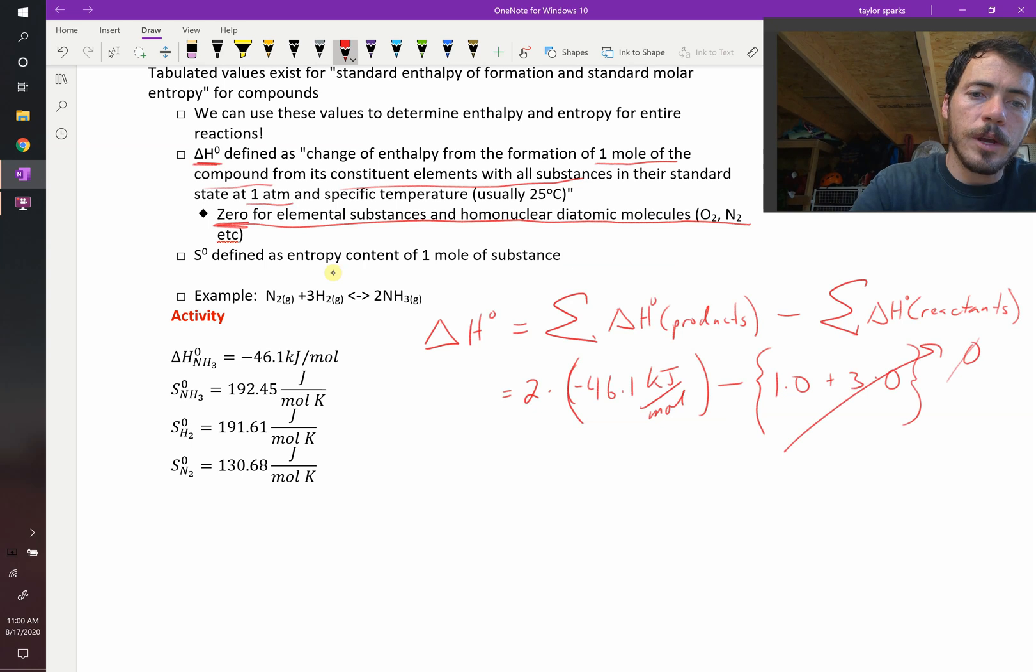Therefore the formation enthalpy is just going to be two times 46.1, so that's going to be negative 92.2 kilojoules per mole.